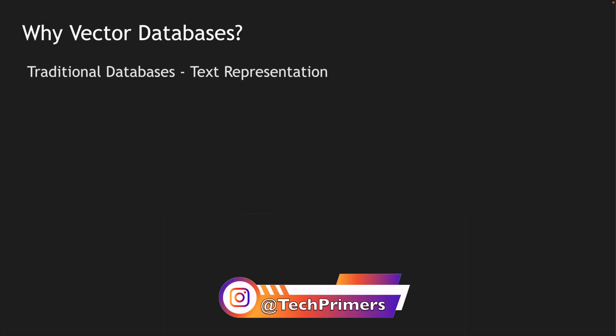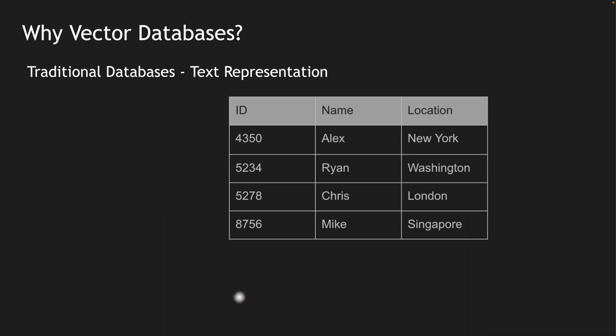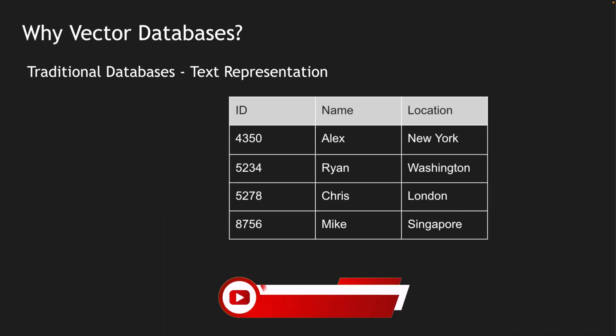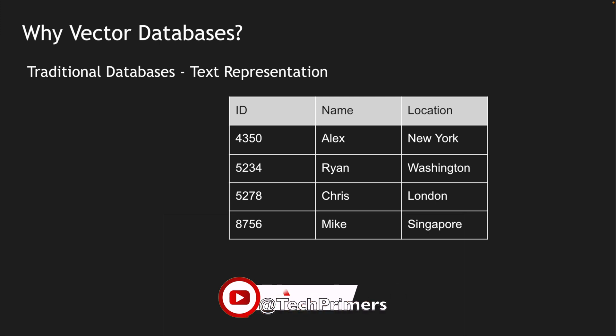So why vector databases? In a traditional database, we store text and represent it in the form of tables and columns. These tabular data get stored in the databases and we can query them using different indexes and search text. We store these texts in their natural form without any transformation, and when we query them we get the results in the same format.